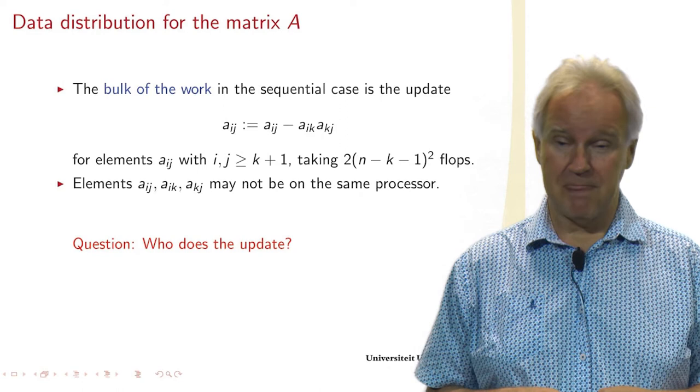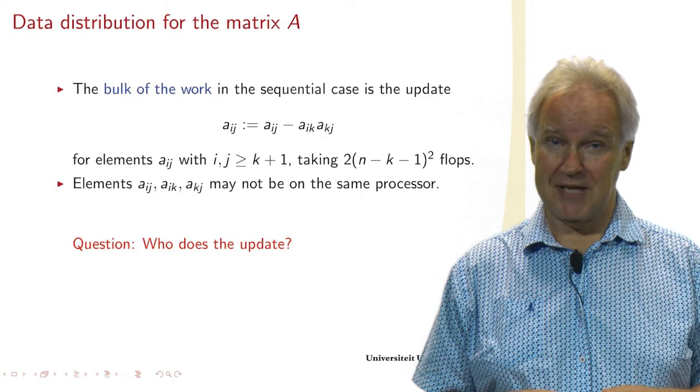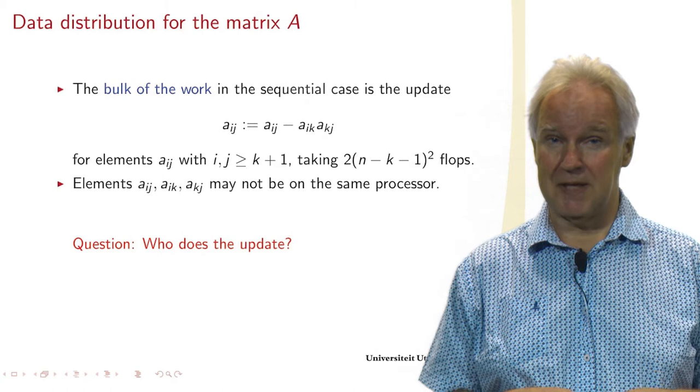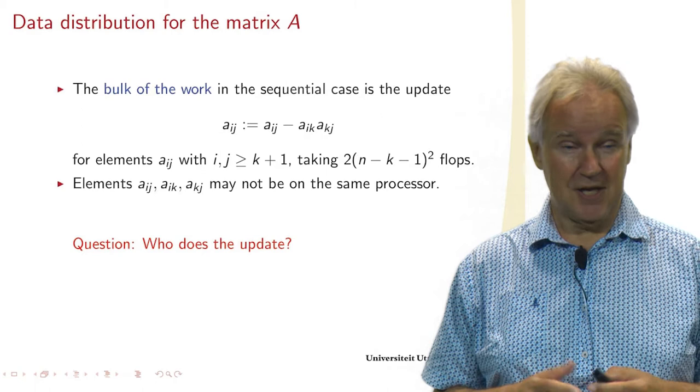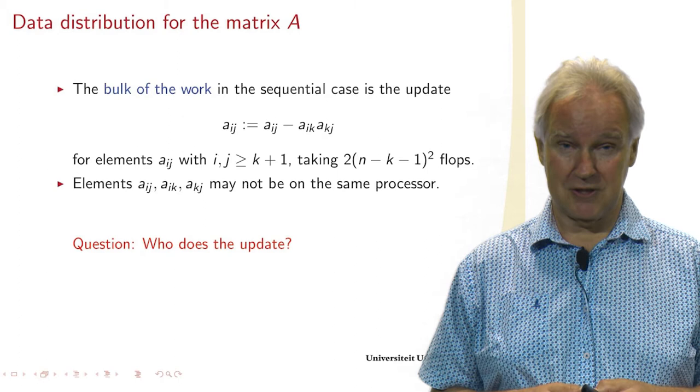All the elements of such a statement may not be on the same processor. AIJ, AIK, and AKJ may be on different processors. Now my question to you: who does the update? Which processor does the update?